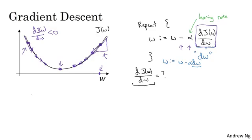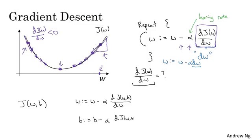So we wrote our gradient descent for J of w if only w was your parameter. In logistic regression, your cost function is a function of both w and b. So in that case, the inner loop of gradient descent, that is this thing here, the thing you have to repeat, becomes as follows: You end up updating w as w minus the learning rate times the derivative of J(w,b) with respect to w, and you update b as b minus the learning rate times the derivative of the cost function with respect to b. So these two equations at the bottom are the actual update you implement.